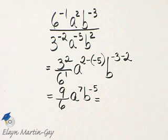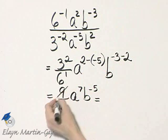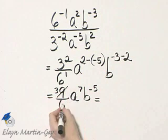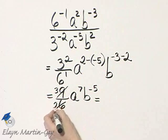So let's finish simplifying. Notice 9 and 6 have a common factor of 3. 9 divided by 3 is 3. 6 divided by 3 is 2.